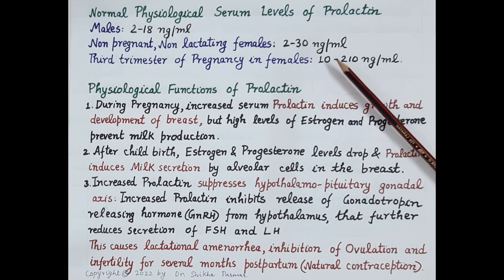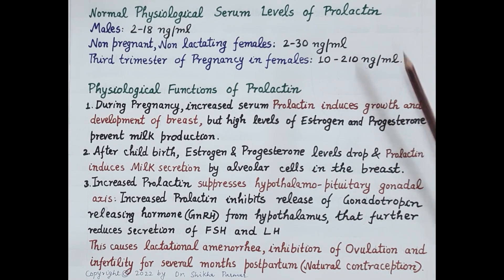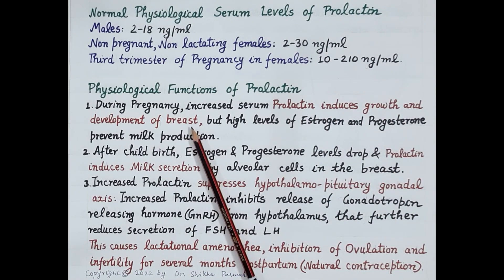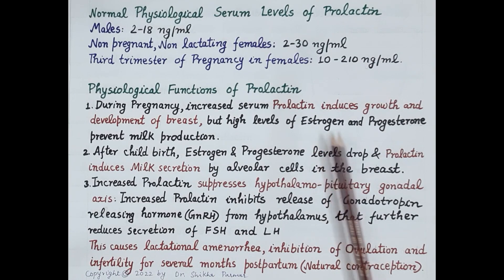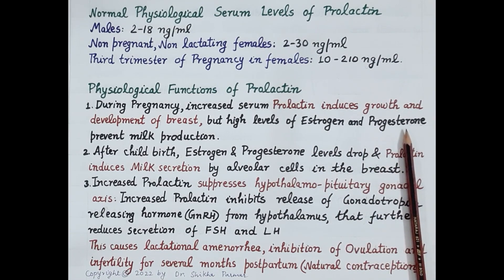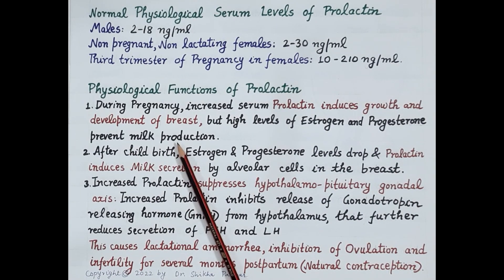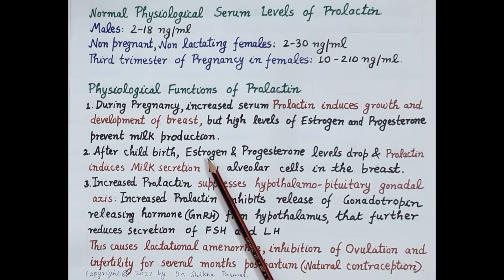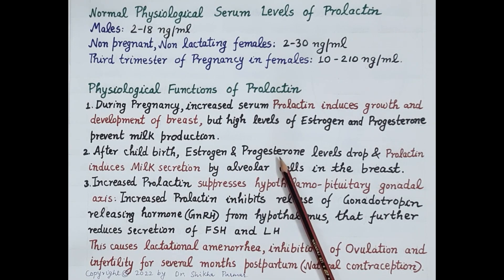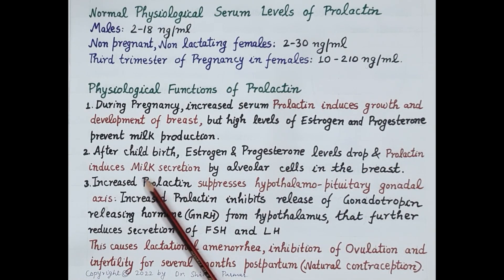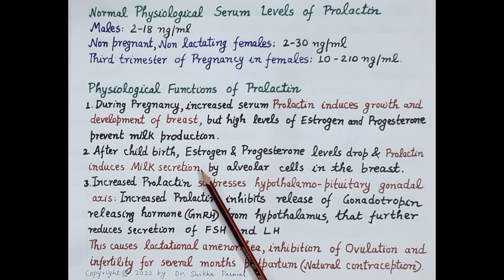During pregnancy, increased prolactin induces growth and development of the breast, but high levels of estrogen and progesterone — the female reproductive hormones — prevent the production of milk. After delivery and childbirth, the levels of estrogen and progesterone drop, and increased prolactin induces synthesis of milk by the alveolar cells in the breast.